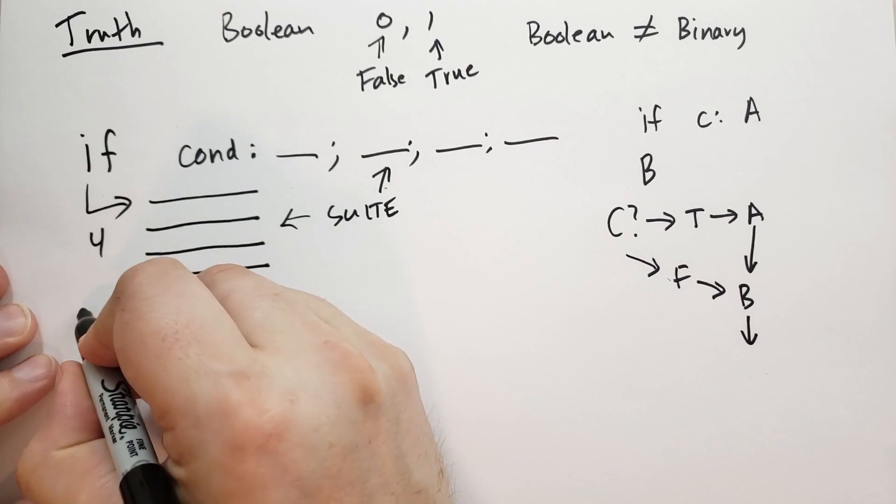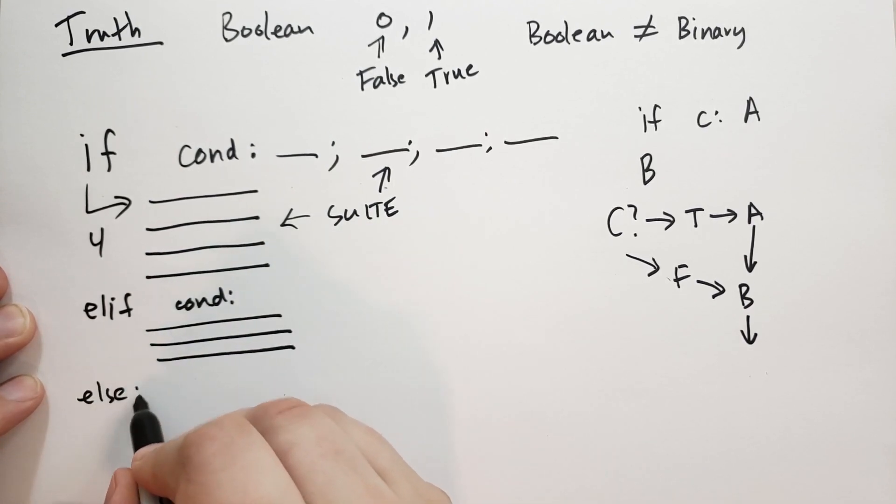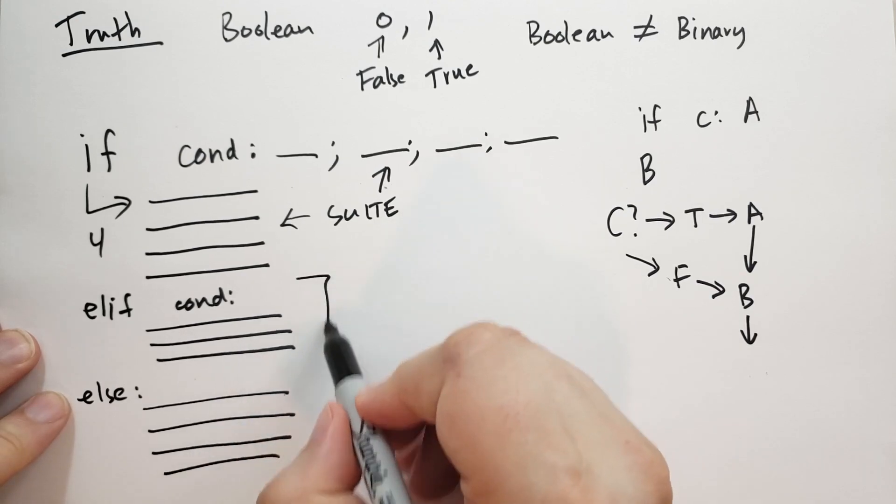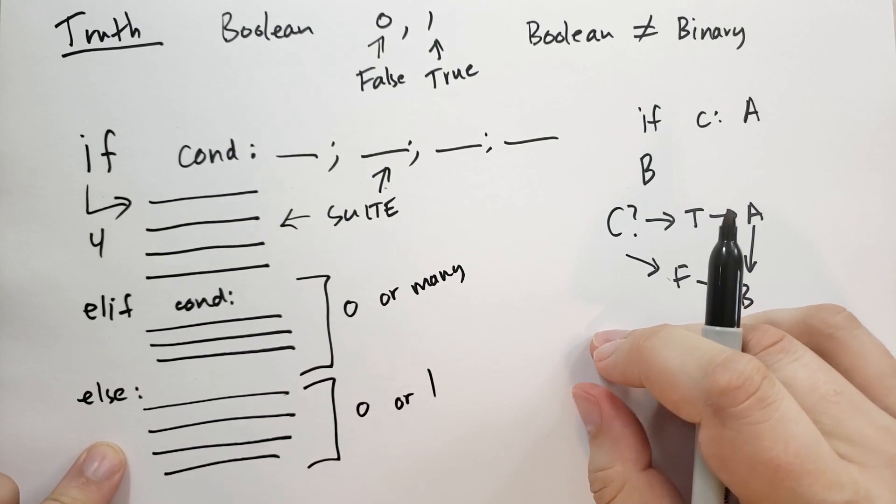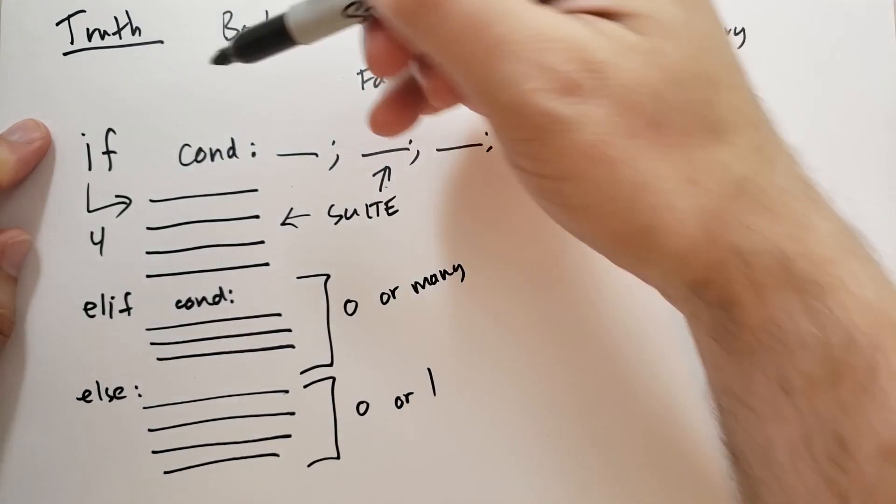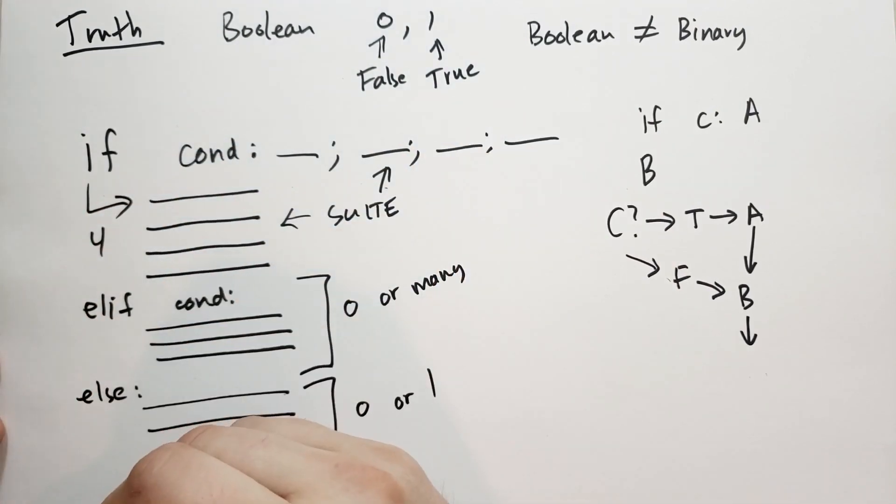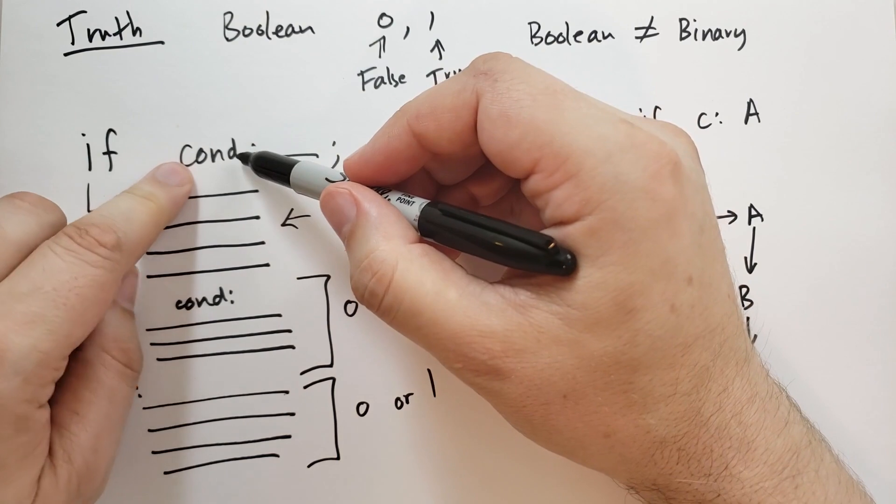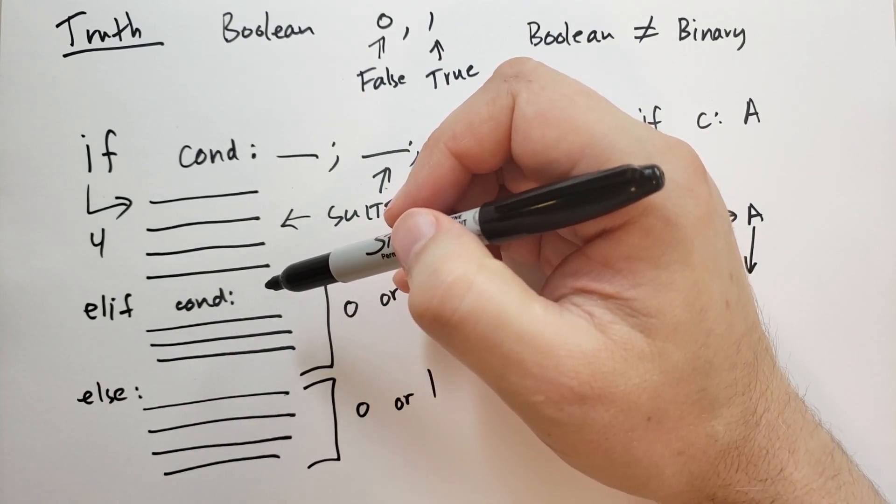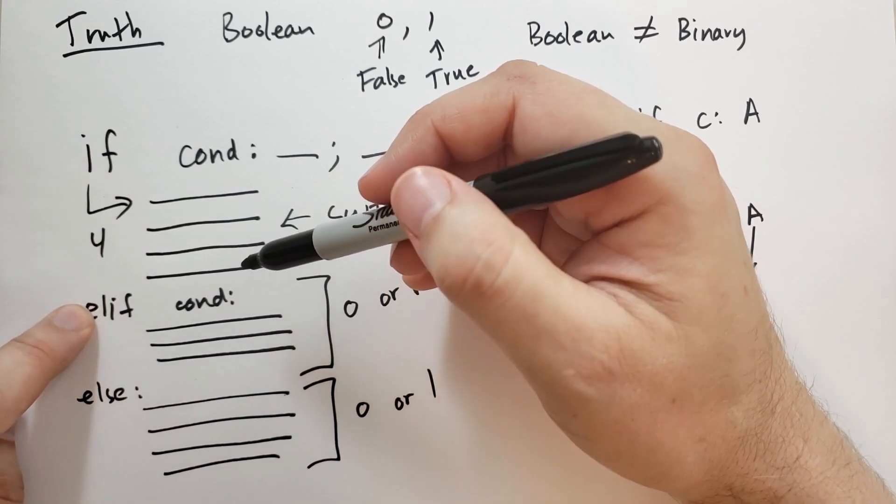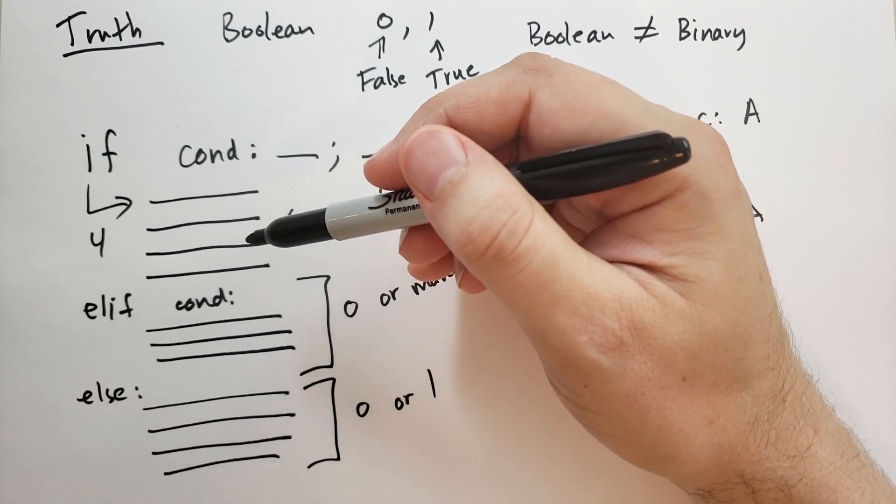The full if statement can also have elif conditions—as many as you want—with a suite of code under that. Then you can have a final else block. You can have as many elif blocks as you want—zero or many. The else block, you can only have zero or one. What Python's doing is it first checks the if condition. If this is true, it runs the suite, then goes to the bottom of the if statement. It skips elif and else. If the condition is false, it looks at the next elif and tests that condition. If that is true, it runs that block then goes to the bottom. If all of these conditions are false, it checks them one at a time. If all are false, then it will run the else block. The else block is run and then it continues with the following statements.